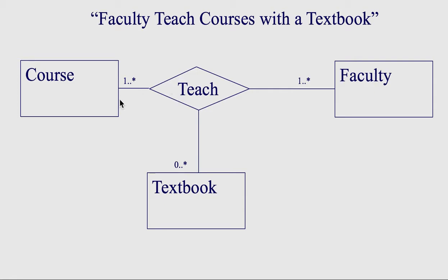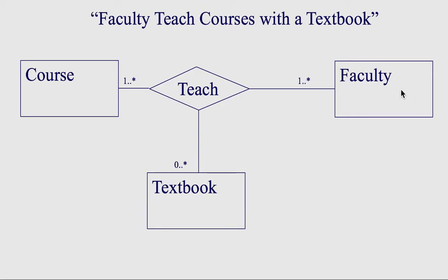And then the third instance — we have course and textbook. One textbook in one course: a textbook is used in a course by how many faculty members? This specific textbook in this specific course can have one or more faculty who are using it. So the way to do it is kind of look at two together, group them together to get the third one and what you think the value is.